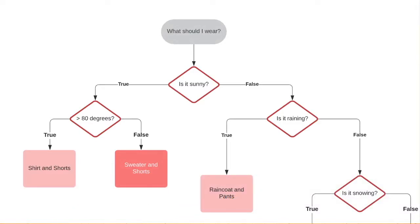Some of you may not agree with some of the outputs in this decision tree. If it's sunny and 79 degrees, I'm not going to wear a sweater and shorts. That's totally fine. You are biased because your life experience has taught you to wear something else. But there are people in the world where 80 degrees is actually really cold.